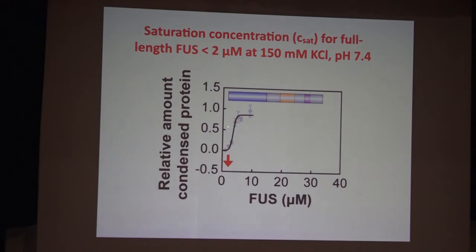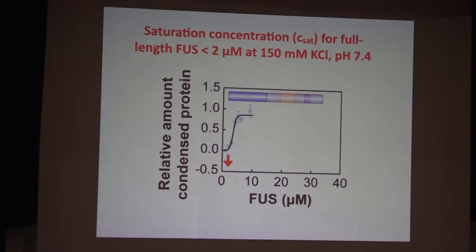One thing that jumps out is that these IDPs with prion-like domains have a blocky architecture. The putative prion-like domain sequence seldom has any charges at all, while the RNA recognition modules — which are also disordered — have a large amount of charge, which makes sense. There's a selection for arginine. Here are data for FUS: quantifying using microscopy the relative amount of condensed protein, you can see a threshold concentration above which most of the protein becomes condensed into a droplet. Under these solution conditions, that concentration is around 2 micromolar.